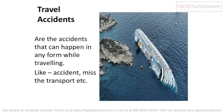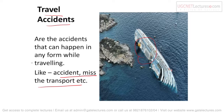Travel accidents are accidents that can happen in any form while traveling. They are not only road accidents — they can include missing transport, losing your passport in a foreign country, or losing your luggage. Any accident that happens during travel, whether by road, water, air, or train, is a travel accident.